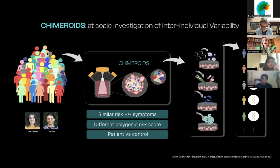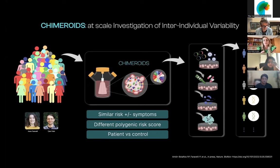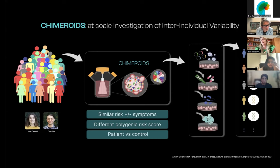We had the ambition to investigate inter-individual variability at scale. This is the work done in full collaboration with postdoc Irene Faravelli and Tyler Fates, the computational biologist analyzing the data. What we wanted to do was take a population of donors and put them in the same entity — what we call a chimeroid. This entity is very flexible: depending on your biological question, you can choose what to assess, and you can also pick whatever stressor you want to use — genetic, drug screening, or environmental. Most importantly, we can capture how a specific donor is going to be affected by molecular methods.